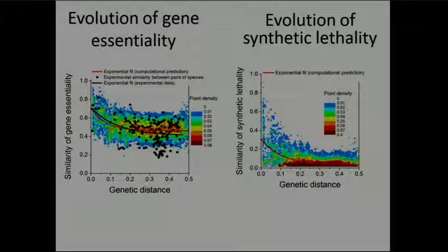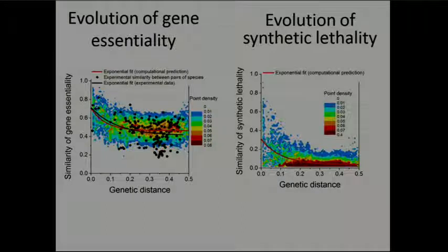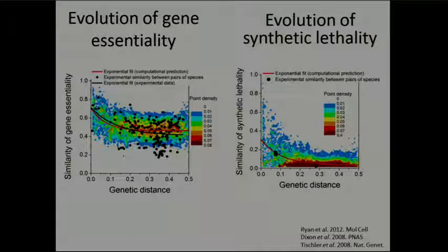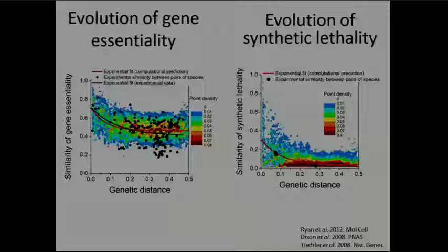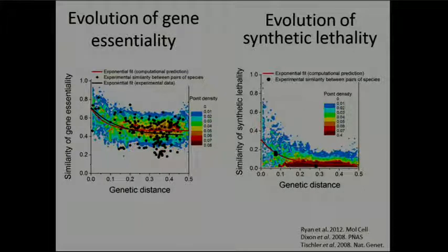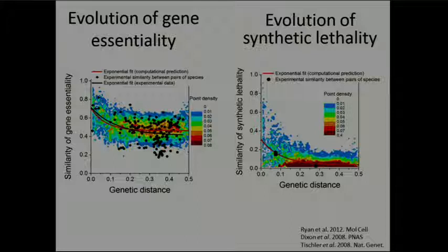We couldn't find bacterial data for this, but studies comparing budding yeast, zebrafish, and C. elegans using genetic interaction maps exist for eukaryotes. The conservation levels reported in those studies are consistent with what we predict: genetic interactions are much less conserved than essentiality. This makes sense because there are more ways to perturb genetic interactions between two genes.